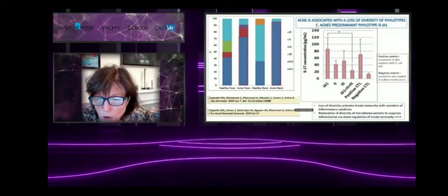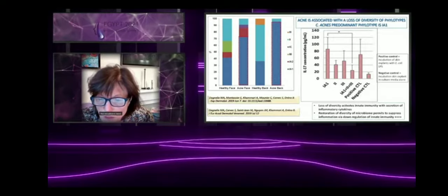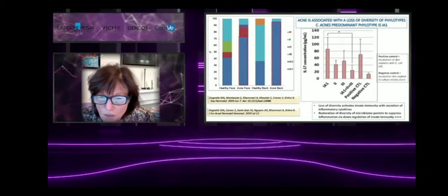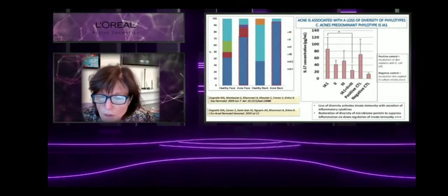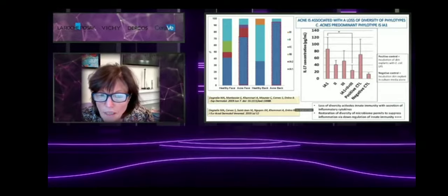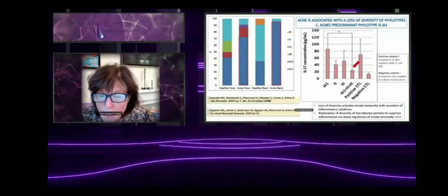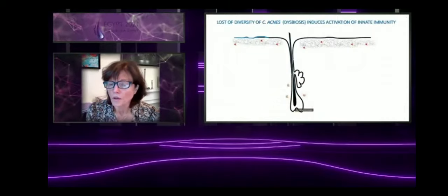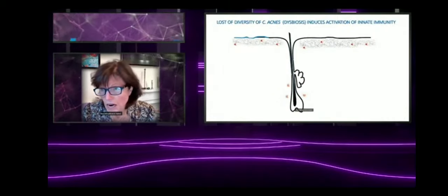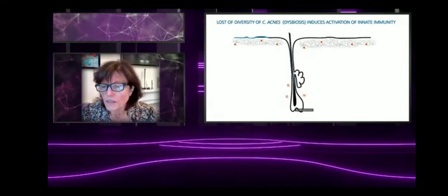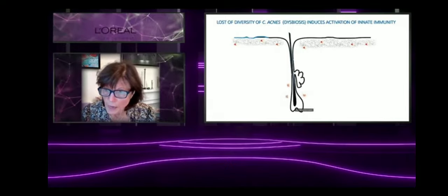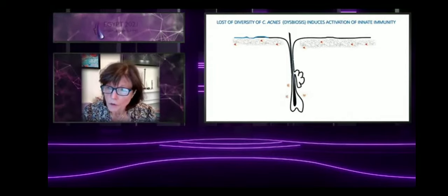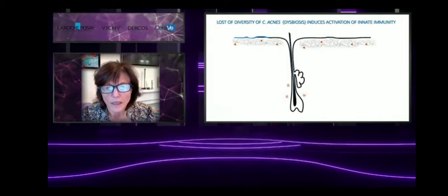But if you combine the three phylotypes, that means that you simulate the diversity, you decrease significantly the expression of interleukin-17. What does it mean? It means that the loss of diversity is responsible for the inflammation, and if you are able to induce again the diversity of the phylotypes, you can decrease the inflammation.